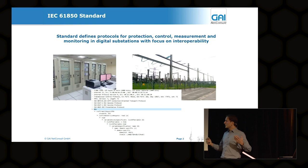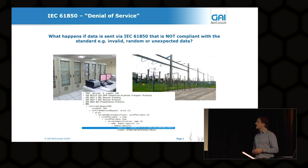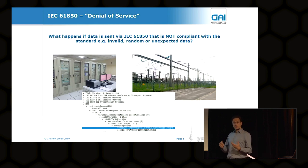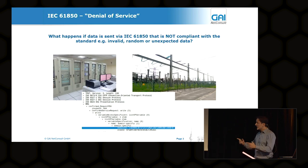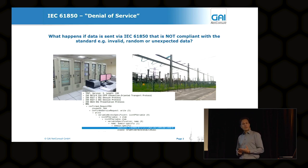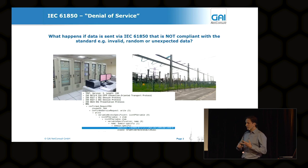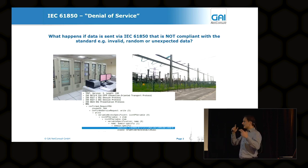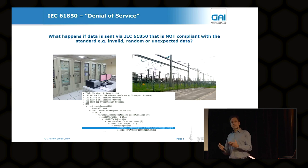We always encounter embedded devices in the substation, and a question comes up automatically: given such a complex protocol leading to very complex processing of IEC 61850 data on embedded devices with very limited hardware resources — limited memory, CPU, and so on — what happens if you send data via IEC 61850 that is not compliant to the standard? For example, invalid, random, or unexpected data — unexpected from a developer's point of view?